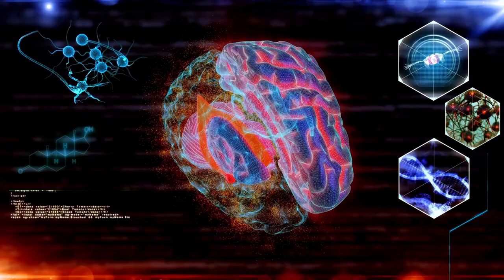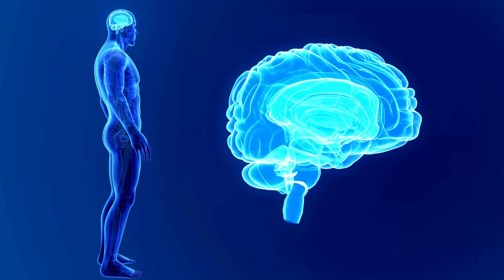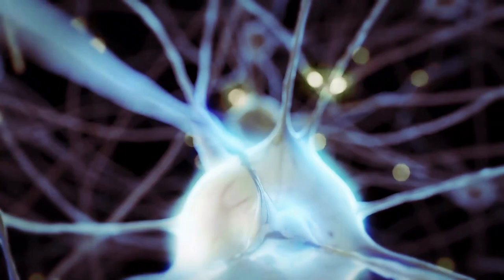The brain is an extremely complex organ. It controls thought, emotion, memory, motor skills, vision, touch, temperature, breathing, hunger, and every process that regulates the body.